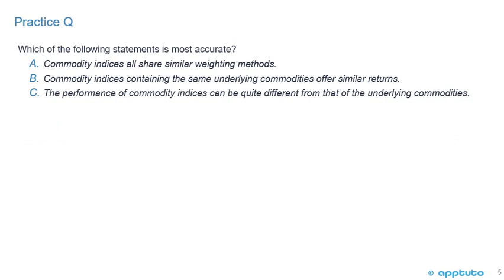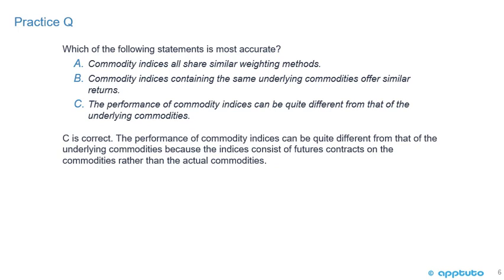Another practice question: Which of the following statements is most accurate? A, commodity indices all share similar weighting methods; B, commodity indices containing the same underlying commodities offer similar returns; or C, the performance of commodity indices can be quite different from that of the underlying commodities. C is correct. The performance can differ because the indices consist of futures contracts rather than the actual commodities. Commodity indices do not share similar weighting methods, and those containing the same commodities do not have the same returns — questions are based on the text, and if you do your reading, it's not that difficult.